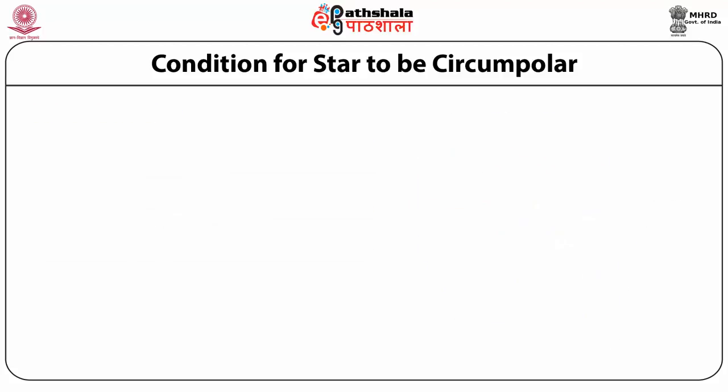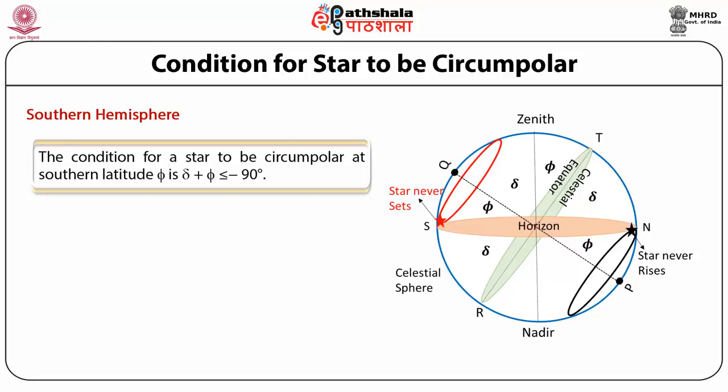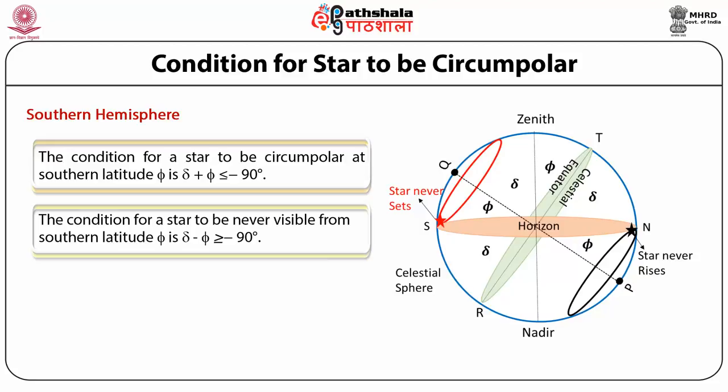Similarly, for an observer in the southern hemisphere, we can obtain the condition for a star to be circumpolar. The condition for a star to be circumpolar at southern latitude is that the declination should be greater than 90° minus phi, and the condition for a star to be never visible from southern latitude is that the declination should be less than phi minus 90°.